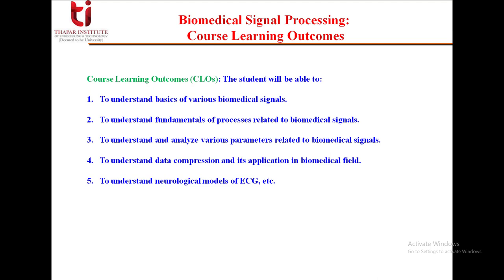The course learning outcomes (CLOs) are as follows. After this course, students will be able to understand the basics of various biomedical signals, understand the fundamentals of different processes related to biomedical signals, analyze various parameters related to biomedical signals, understand data compression and its application in the biomedical field, and understand the different neurological models of ECG and EEG.